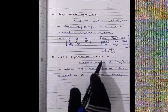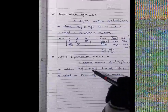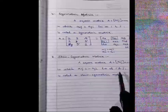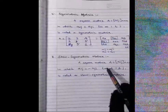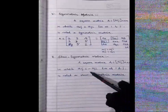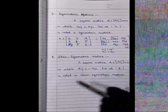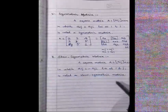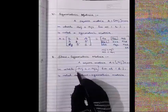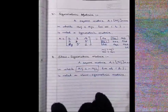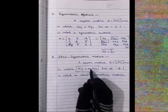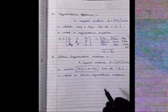Type number 11 is the skew-symmetric matrix. A square matrix A = [Aᵢⱼ] of order n×n in which element Aᵢⱼ equals minus Aⱼᵢ for all i and j is called a skew-symmetric matrix. The condition is similar to symmetric matrix but with a minus sign: Aᵢⱼ = −Aⱼᵢ.